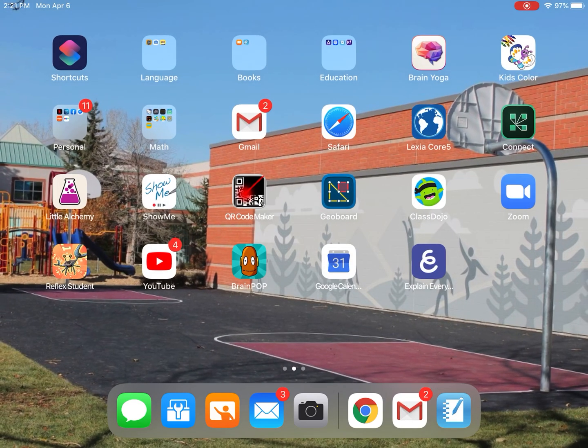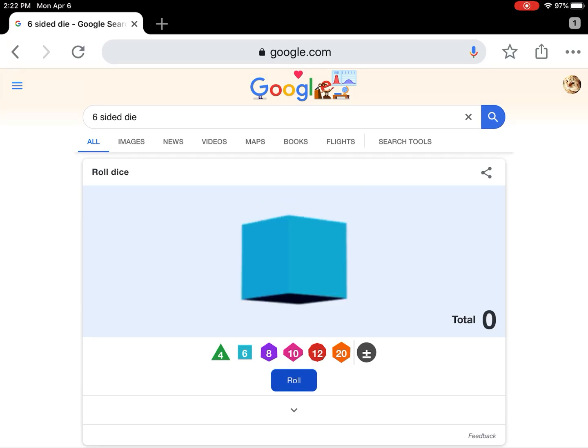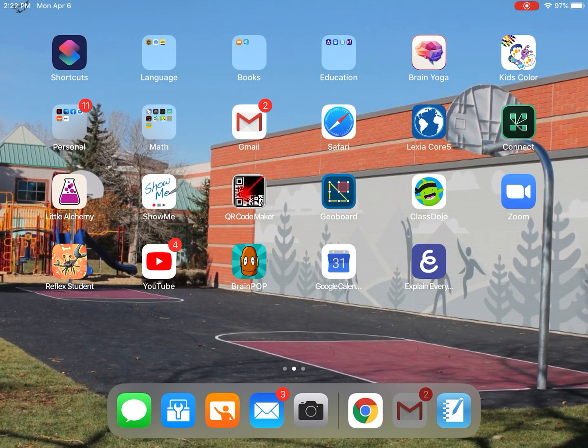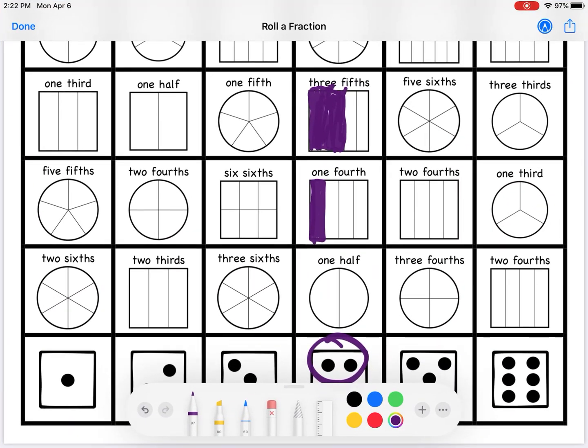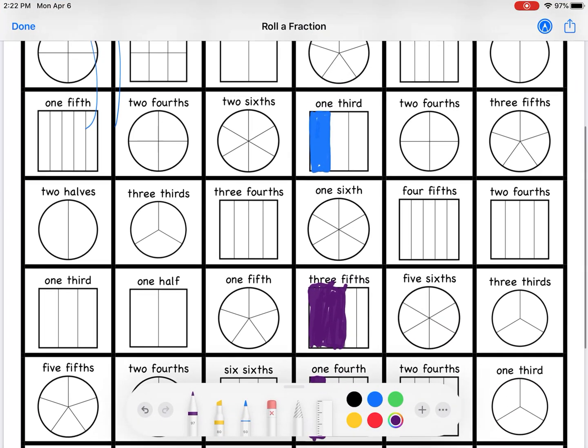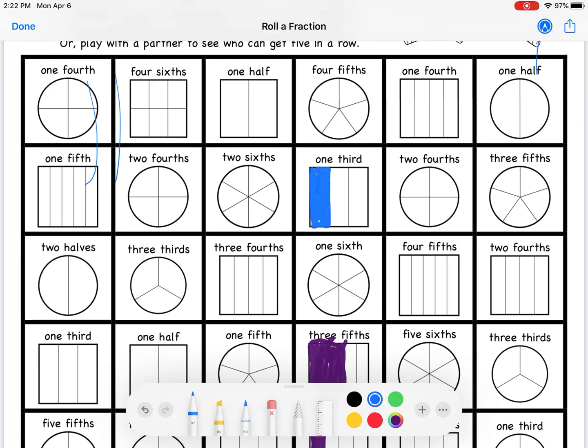Okay Kyle go ahead. Okay so he rolled and he got a three. What's he going to pick? Ah two-sixths. Very smart because he picked two that were really close together so now hopefully he can get five in a row.